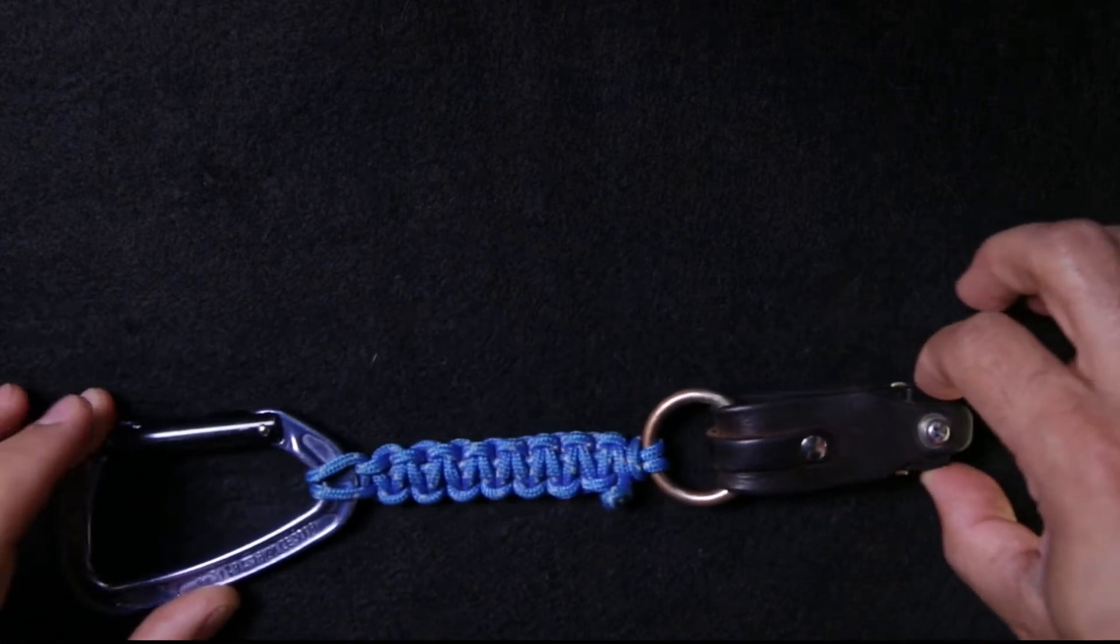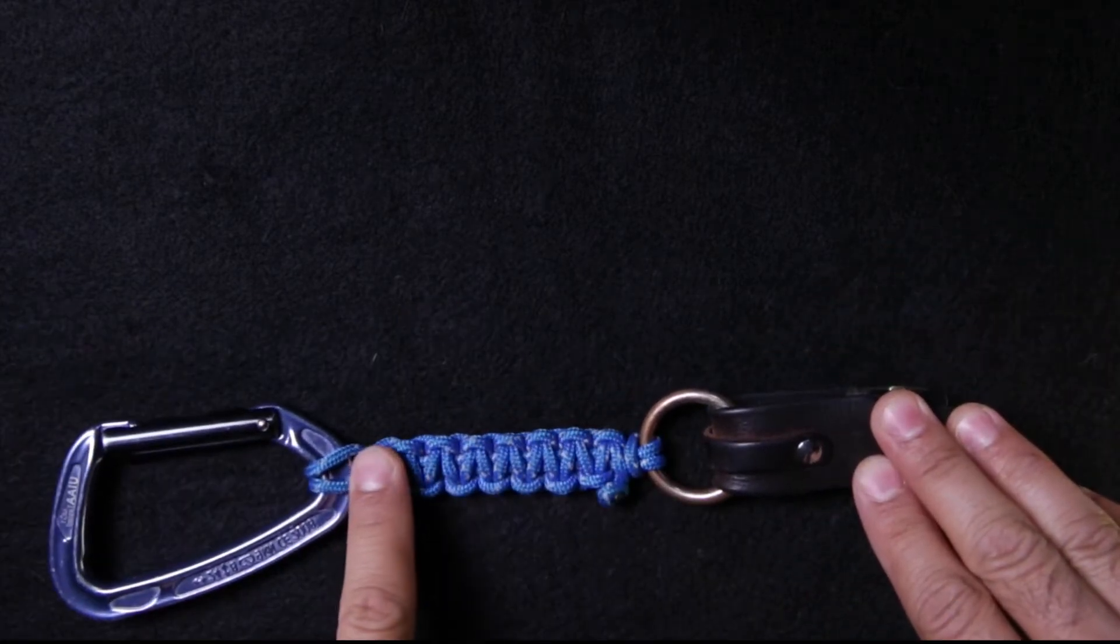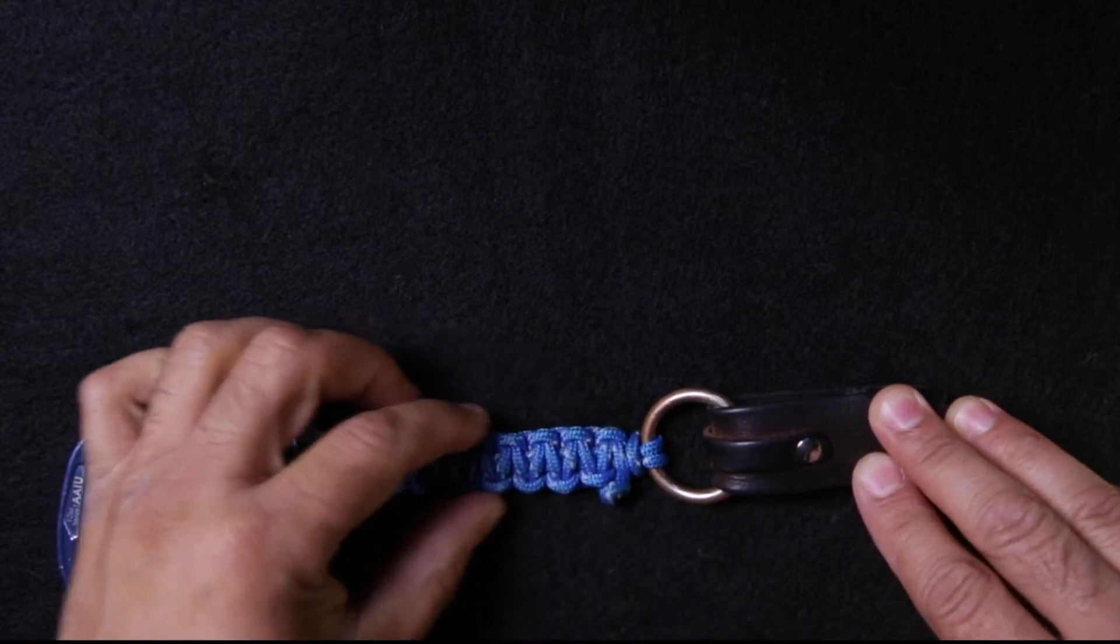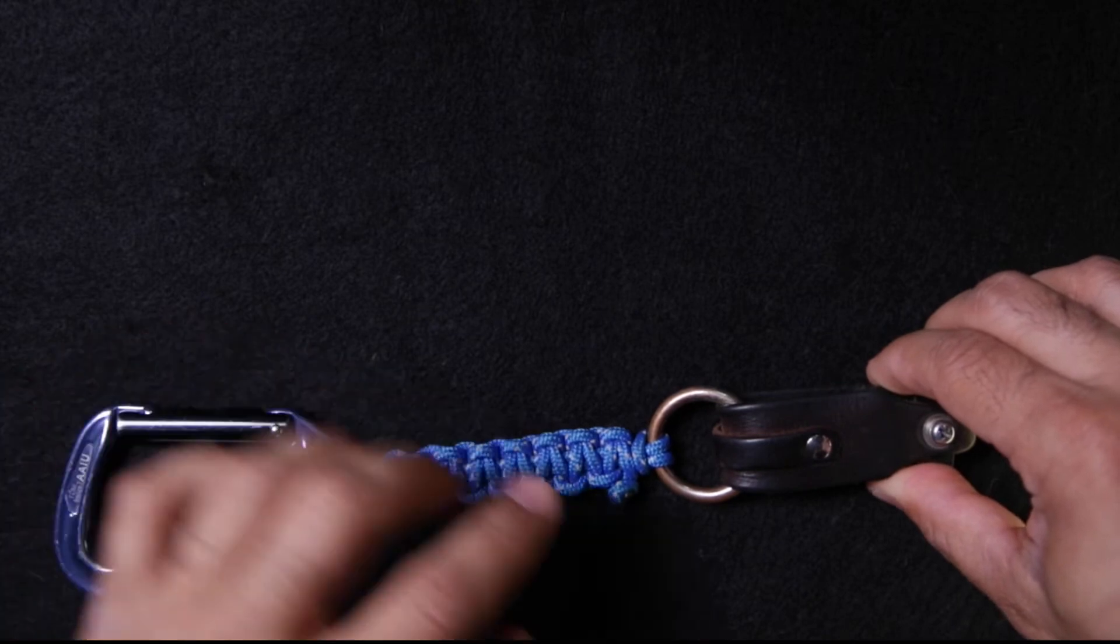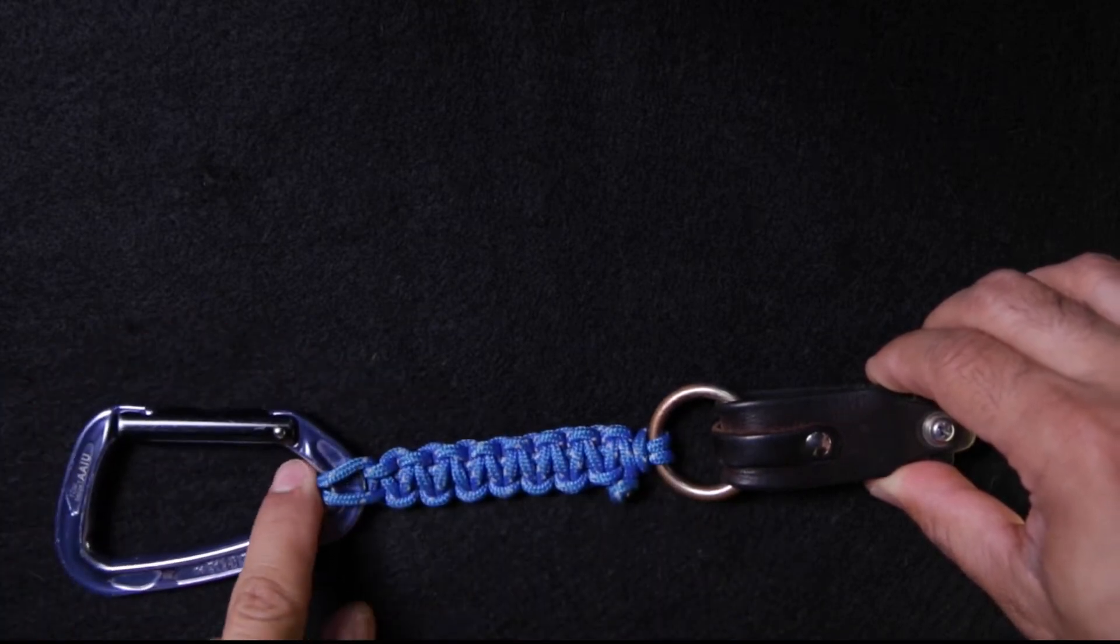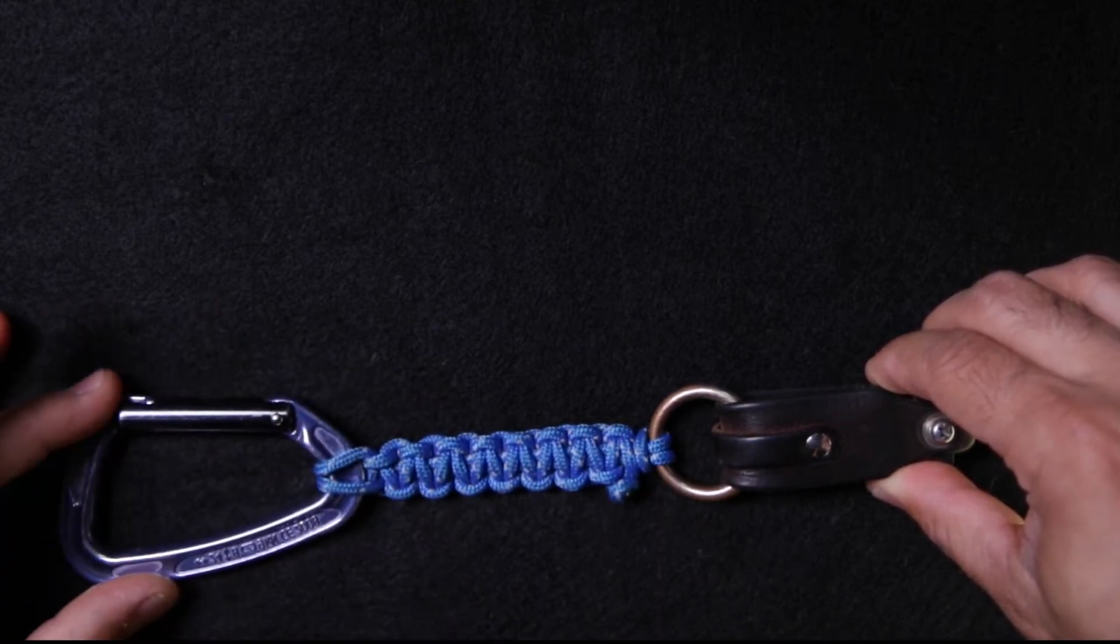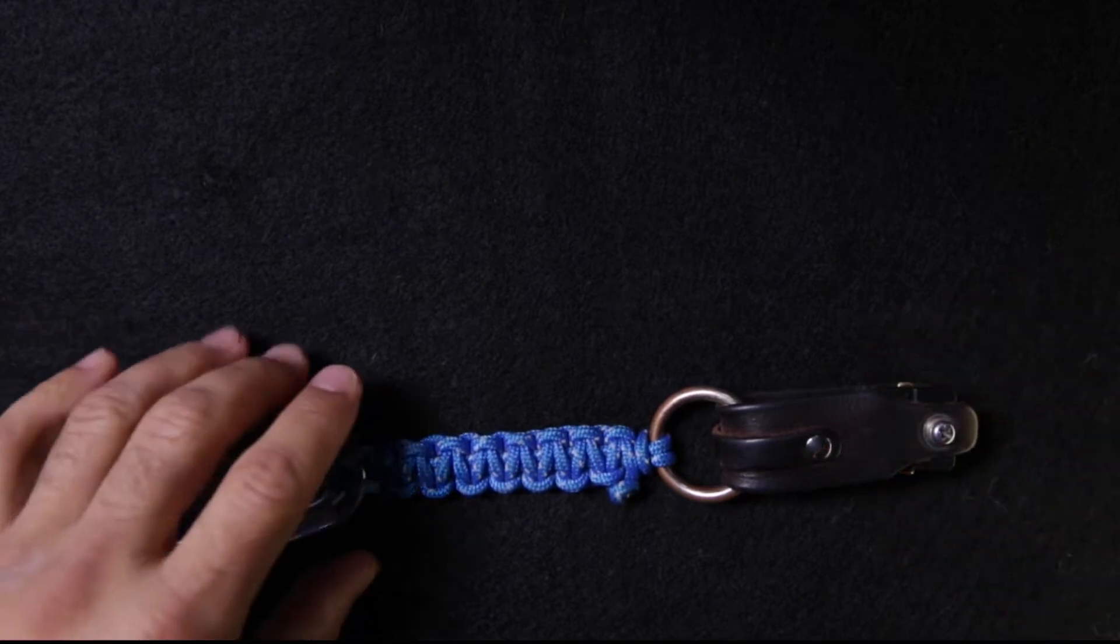But the thing that's kind of special about this is that it uses this three millimeter utility cord, got this at REI, and then it's got this Cobra weave onto a carabiner.